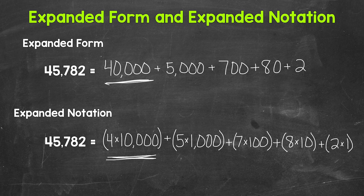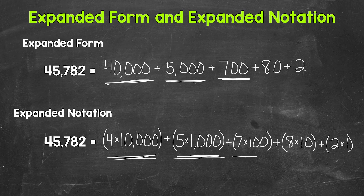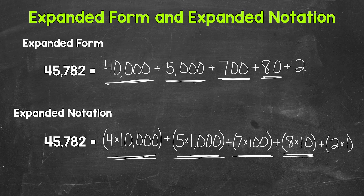Then we have a 5 in the thousands place. So 5,000 for the expanded form, and then 5 times 1,000 for the expanded notation. Next, we have a 7 in the hundreds place. So 700 for the expanded form and 7 times 100 for the expanded notation. Then we have an 8 in the tens place. So 80 for the expanded form and 8 times 10 for the expanded notation.